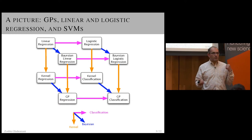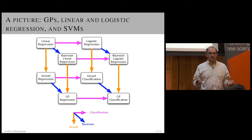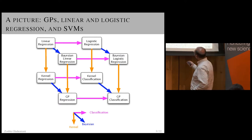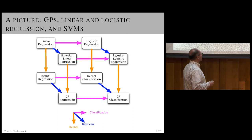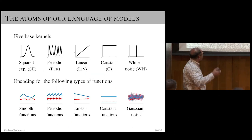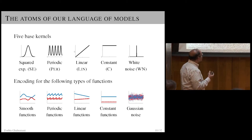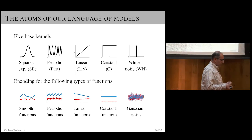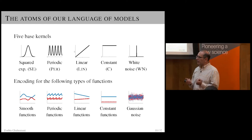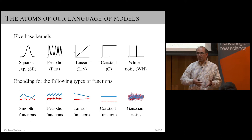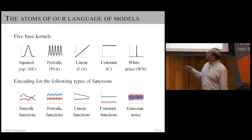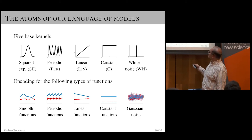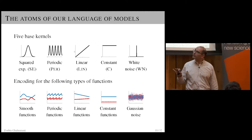Applying all three operations — Bayesian, kernelized, classification — gives Gaussian process classification, which is the Bayesian sister of support vector machines. I've given a talk titled 'Why I Never Use SVMs,' not because I don't like them, but because as a Bayesian I can always use GP classification instead. Now, what can we do with kernels in a Gaussian process? The atoms of our language are a few simple base kernels: squared exponential, periodic, linear, constant, and white noise. These correspond to basic properties: smooth functions, periodic functions, linear functions, constant functions, and white noise.